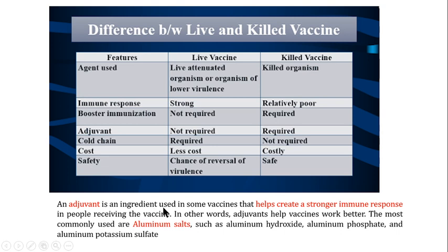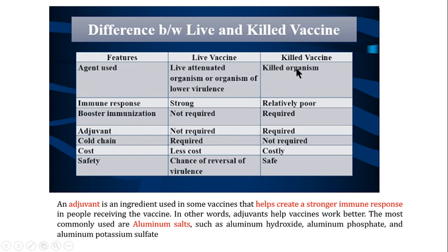An adjuvant is an ingredient used in some vaccines that helps create a stronger immune response in people receiving the vaccine — in simple words, adjuvants help vaccines work better. The most commonly used adjuvants are aluminum salts, such as aluminum hydroxide, aluminum phosphate, and aluminum potassium sulfate. These adjuvants are not needed in live vaccines since they already create a strong immune response, but they are used in killed vaccines to boost their relatively poor immune response. Regarding cold chain, it is required for live vaccines but not for killed vaccines.